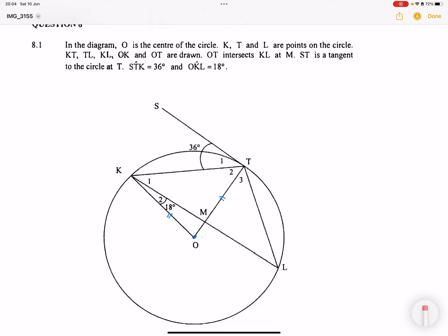Now they say that ST is the tangent. That is very important. The moment I've got a tangent there, I'm going to look for the opportunity of using my tan-chord theorem. I know if this is 36 degrees, there's my chord. In this case, it means that the angle on the opposite side of the chord would be 36 degrees. So that angle should also be 36.